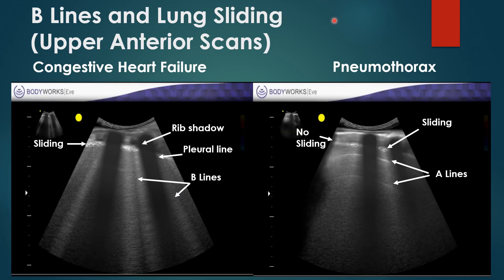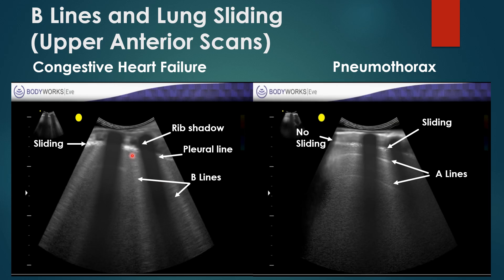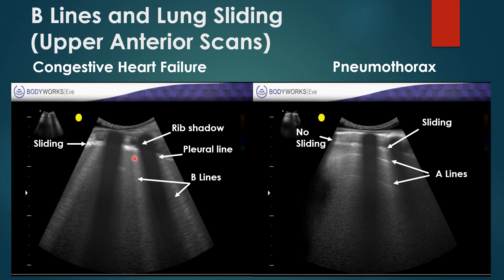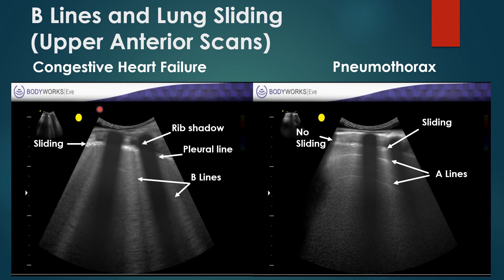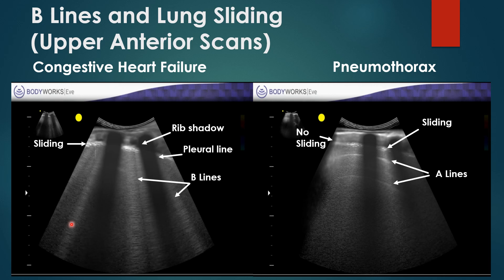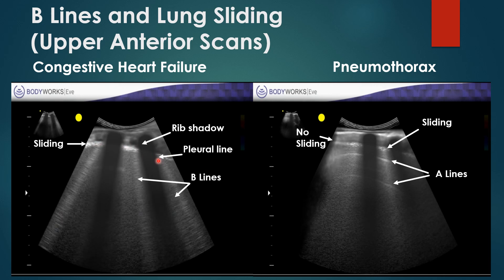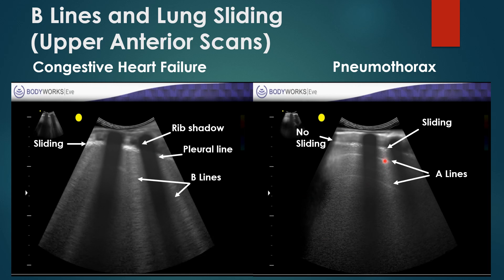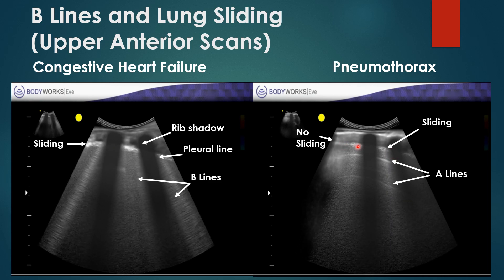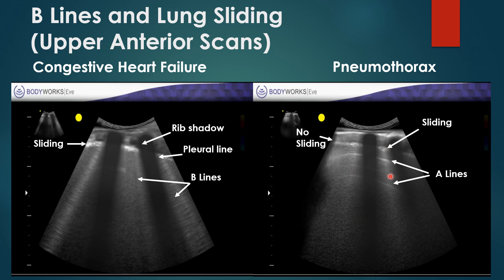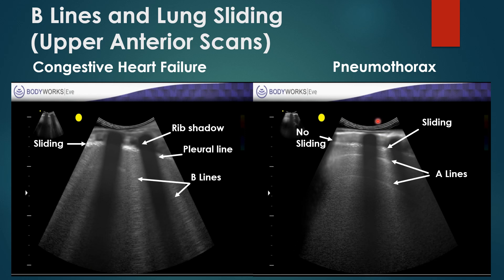B-lines are basically alveoli filled with fluid or some type of interstitial disease. In a patient with congestive heart failure, you can see a lot of B-lines representing fluid-filled alveoli, with a pleural line showing some sliding and a rib shadow. In contrast, with pneumothorax, you can see sliding around the lung point on one side but no sliding on the other, indicating the lung isn't really moving. You do see some A-lines from normal reverberation from the transducer on the chest wall.